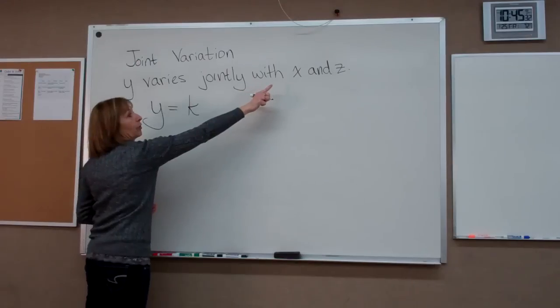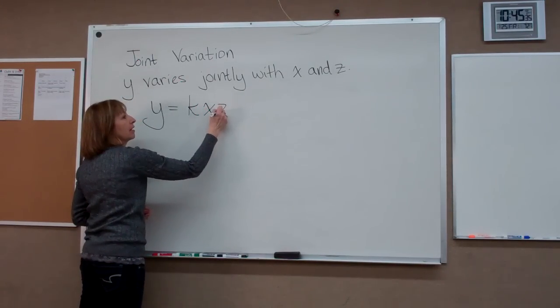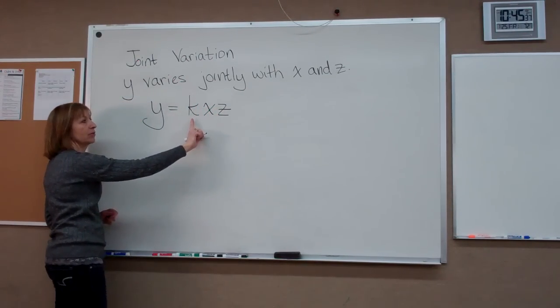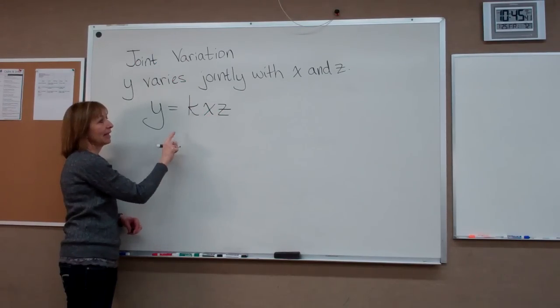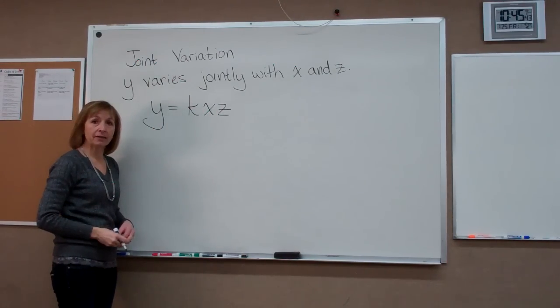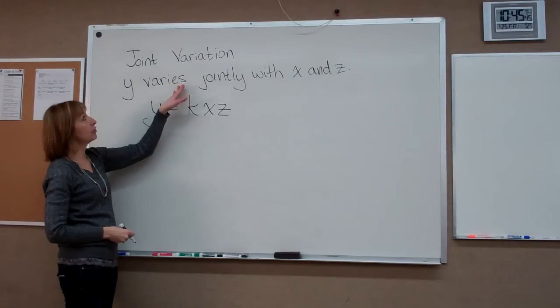and then we're going to multiply that to the product of the letter expressions that follow. So k times x z. And that equation will represent our joint variation.